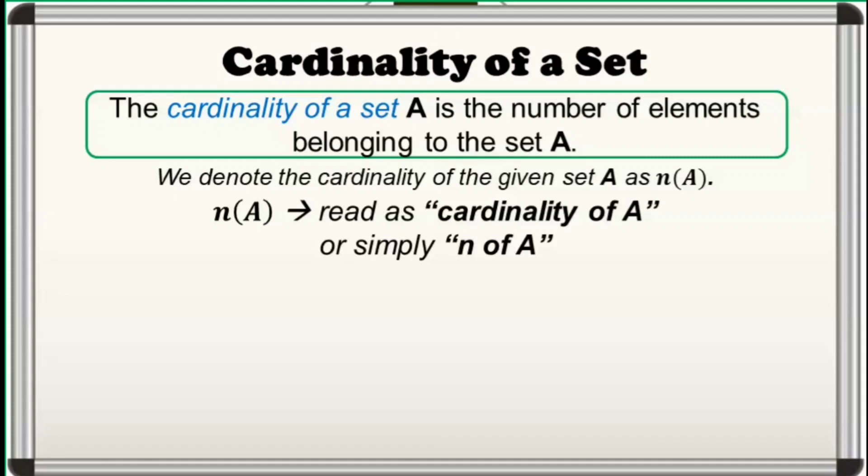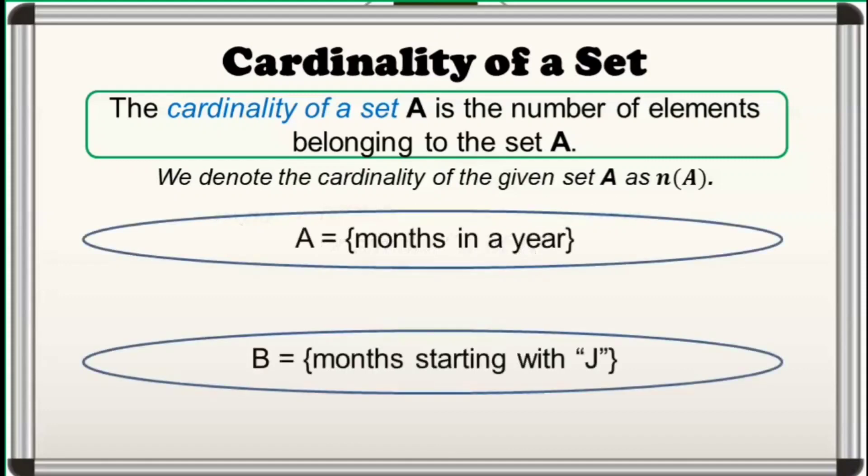In the previous activity, if we let set A as the set of months in a year, then the cardinality of A is equal to 12, or N of A is equal to 12. If we let set B as the set of months starting with J, then the cardinality of B is equal to 3, or N of B is equal to 3.